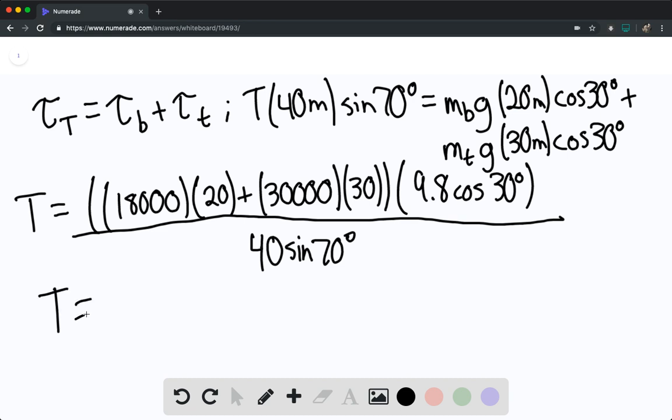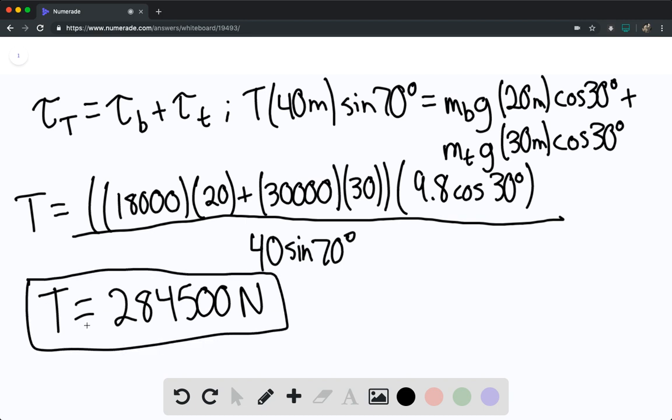We find that the magnitude of the tension is going to be 284,500 newtons. This would be your answer for part a.